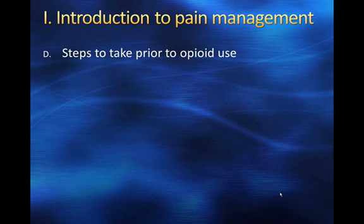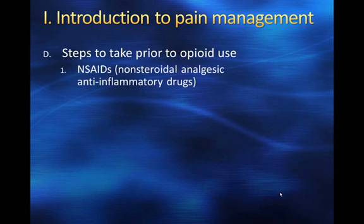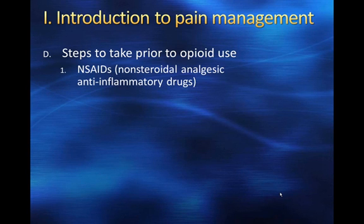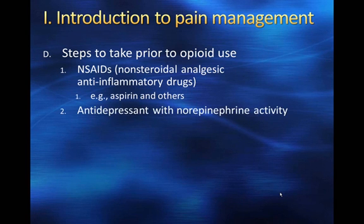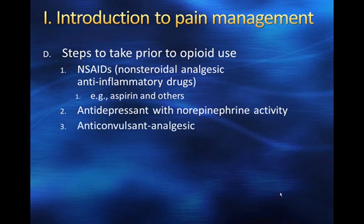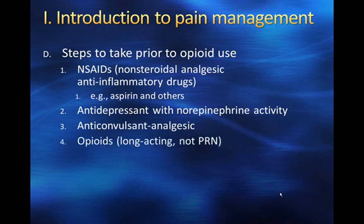NSAIDs are our first line of defense when it comes to treating pain — aspirin, ibuprofen, naproxen sodium, and acetaminophen. We can also treat chronic pain with an antidepressant that has norepinephrine activity, as those are most effective for treating chronic pain. You can also use an anticonvulsant analgesic like gabapentin or Neurontin. And then finally, long-acting opioids — but again, that's our last line of defense. We'll talk about those in later lectures.